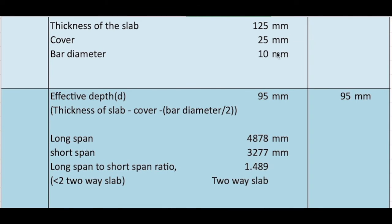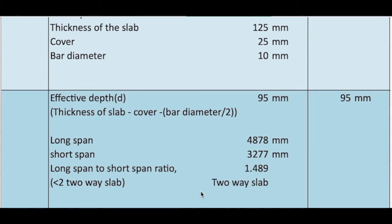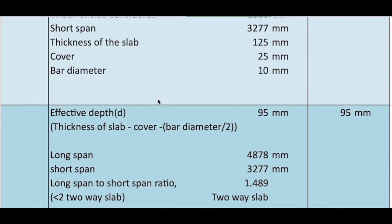So thickness 125 mm, deduct the cover 25 mm and bar diameter by 2, 10 by 2, 5. So 125 minus 30, 95 mm. And to find out whether the slab is two-way slab or one-way slab, we have to get the longer span to shorter span ratio.